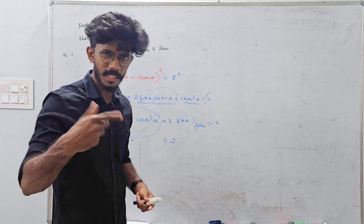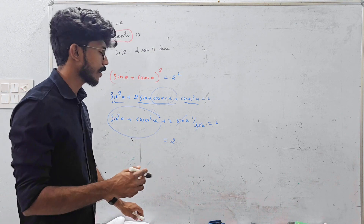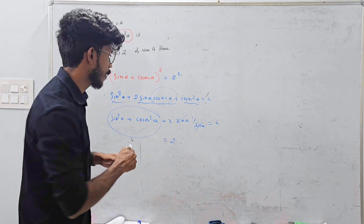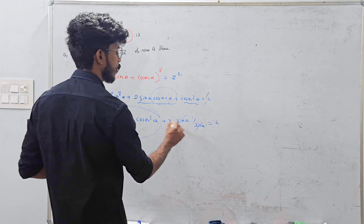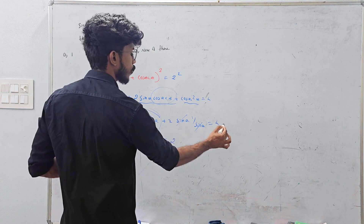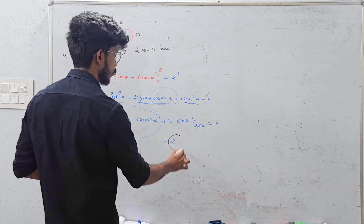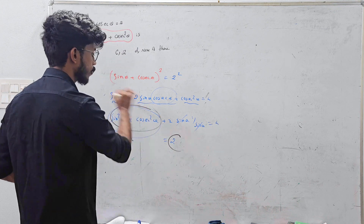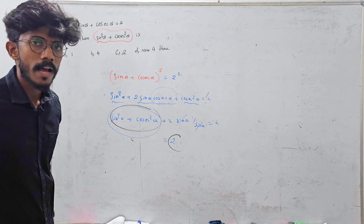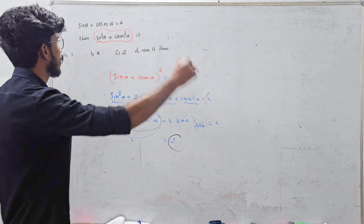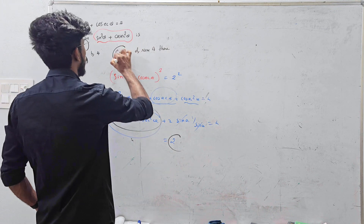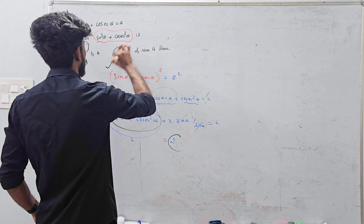Then sin squared theta plus cos squared theta equals 2. So we can do the same step — e² equals 2. Therefore sin squared theta plus cos squared theta gives us option C.